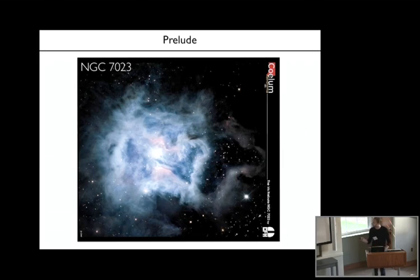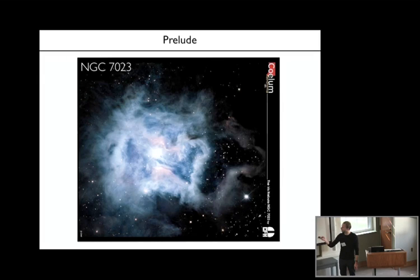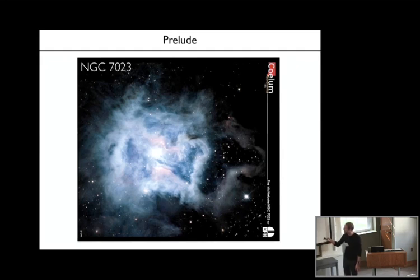Before I go into the presentation, I just want to say a few words about the nebula NGC 7023, because I'm going to talk about it a lot. NGC 7023 is a reflection nebula where you have an intermediate mass star that has formed in a cloud of gas and dust which is still surrounding the star, and the star is illuminating this cloud. What you see in blue is the reflected light from the star.